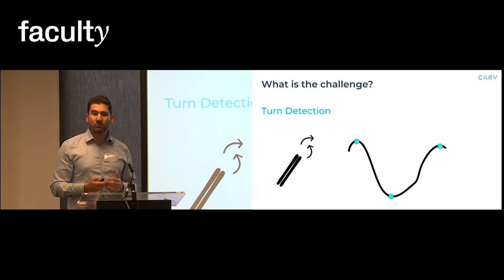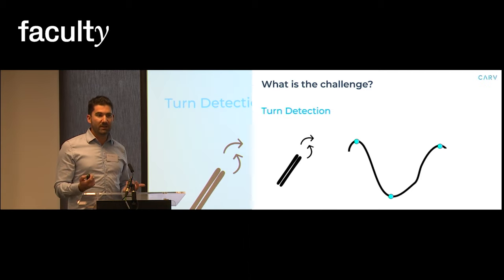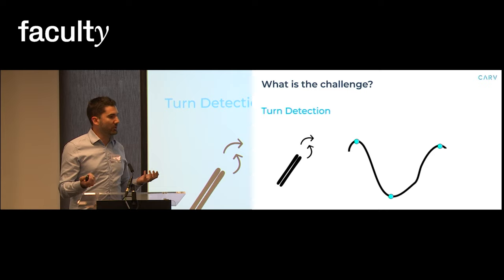Whenever you go down the line you will be doing a right turn and whenever you go up the line you will be doing a left turn. In between this is where a turn happens.